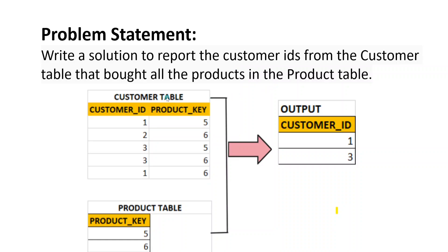We have a customer table with customer ID and the product that they have purchased, and also another table called product which has the list of all products. We need to find the customers who bought all the products from the product table. Customer ID one has two records and bought both products — product key five and six. The product table has only two unique products, which is product five and six, so customer ID one bought all the products.